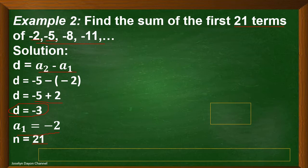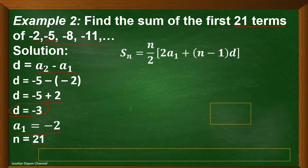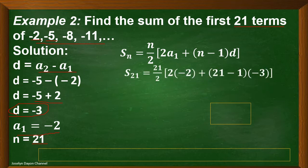Now we are going to write the formula for finding the sum of the first n terms. Next, substitute. S sub 21 equals 21 divided by 2, times the quantity of 2 times A sub 1, which is negative 2, plus the quantity of n minus 1 — that's 21 minus 1 — times d, which is negative 3.